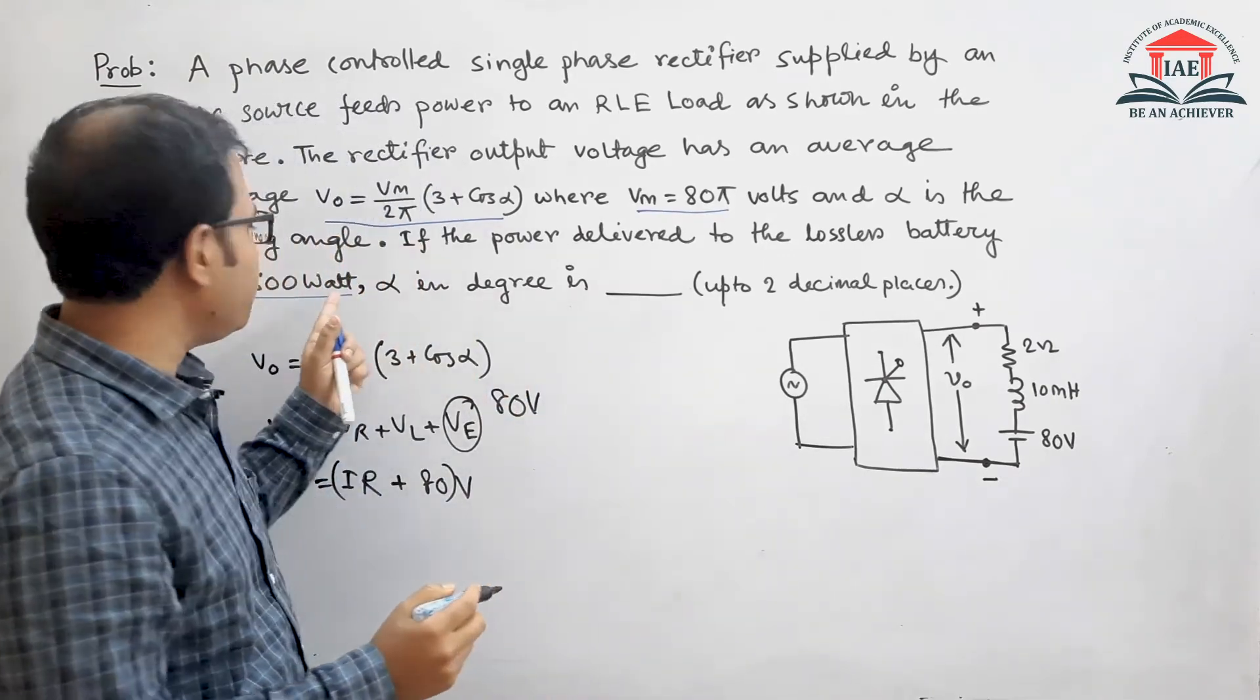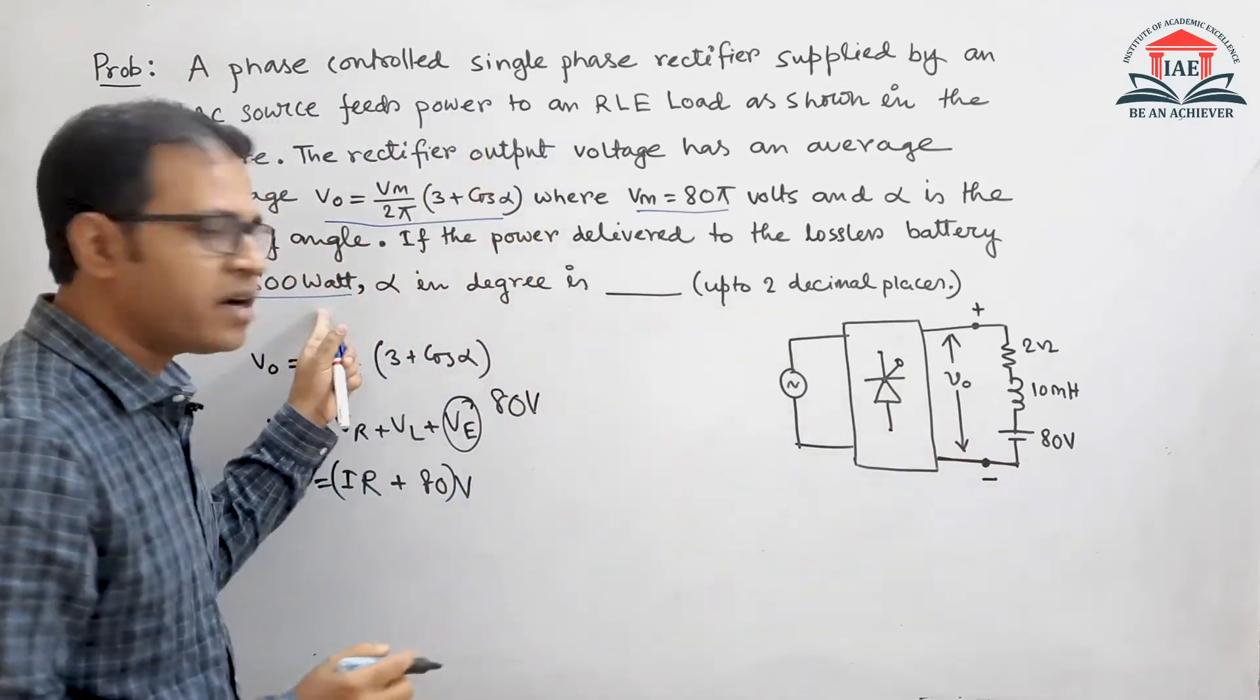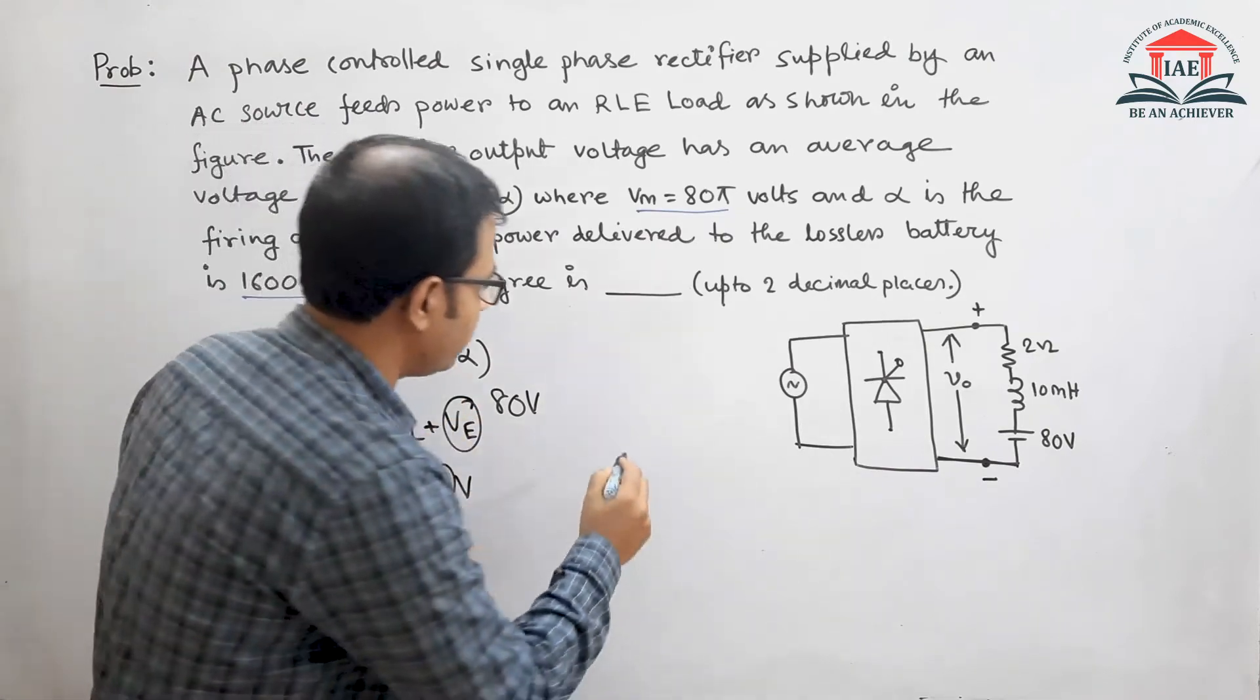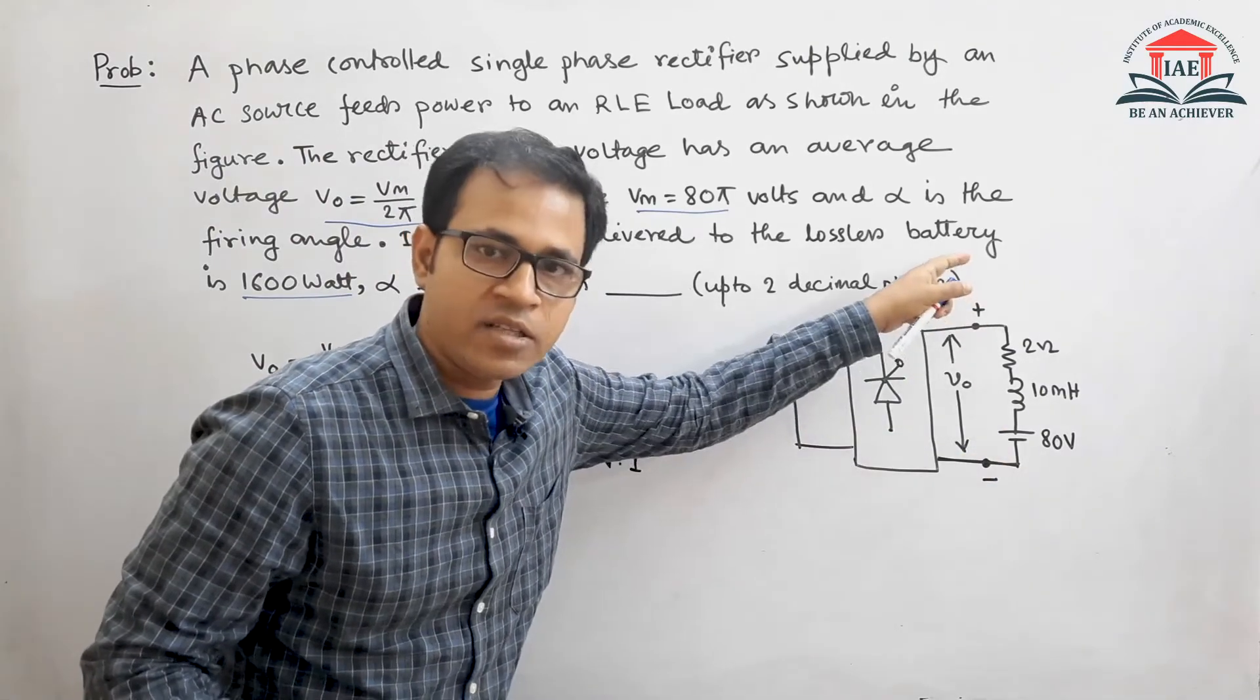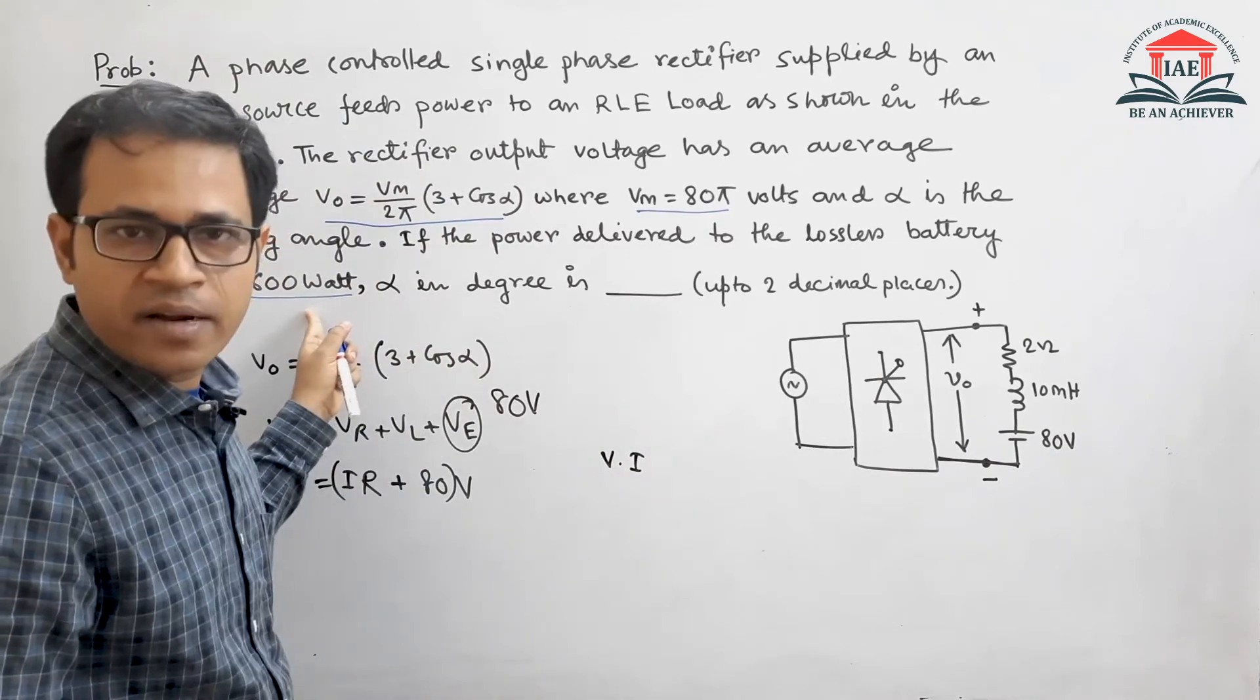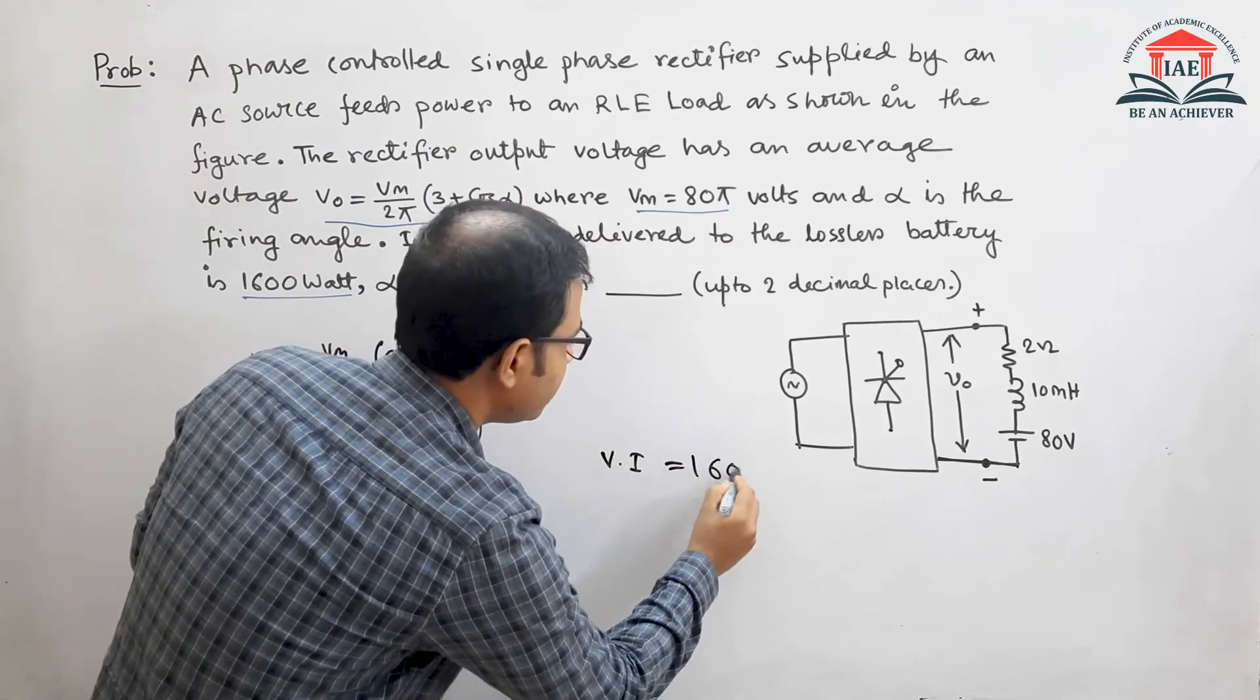We see that the battery power is given as a lossless battery at 1600 watts. So if the battery power is 1600 watts, we can say that V into I, the voltage across the battery and current through the battery, equals 1600 watts.